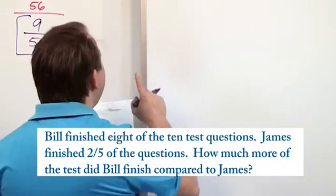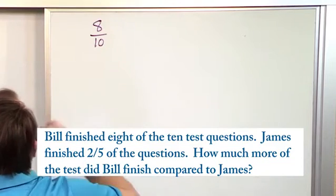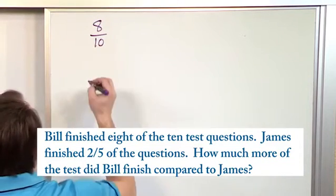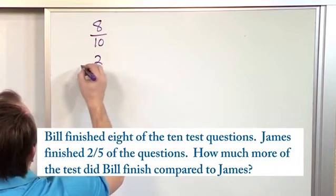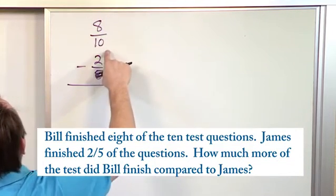So if Bill finished 8 of the 10 questions, that's a fraction by itself. 8 of the 10 questions. He finished 8 tenths of the test. James finished 2 fifths of the test, and we need to subtract them. We want to find out how much more of the test did this guy finish than this guy.